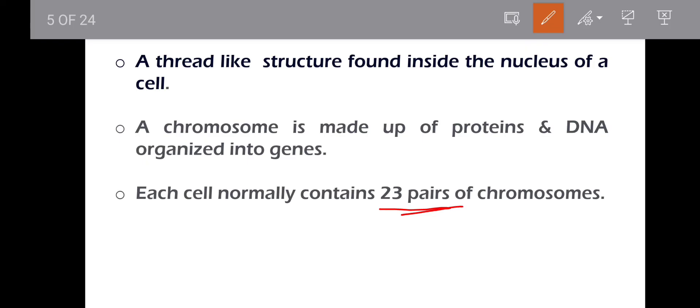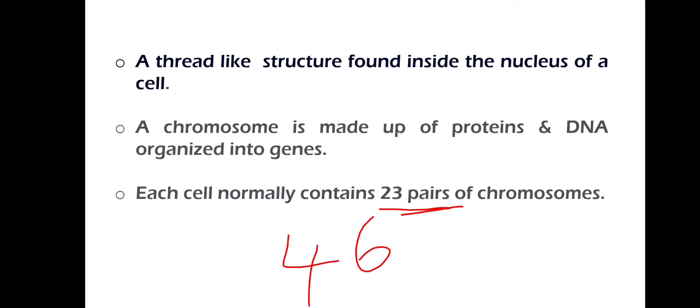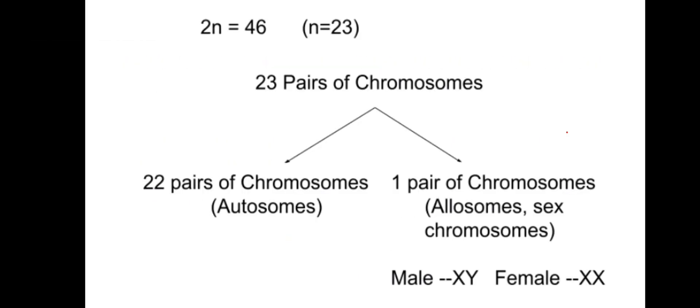23 pairs is 46 chromosomes total. This is the diploid condition. A gamete contains 23 chromosomes — the haploid condition — which we will discuss in later classes.